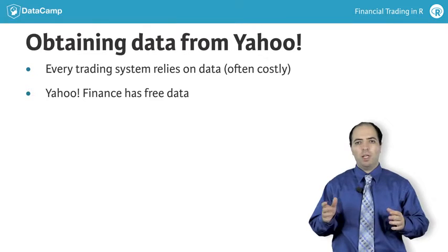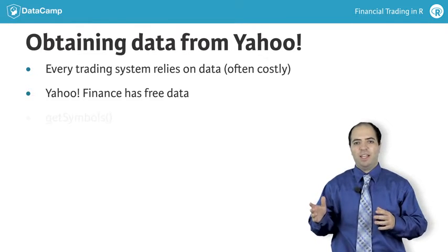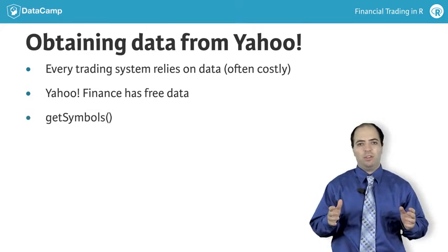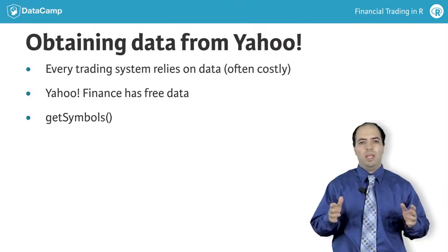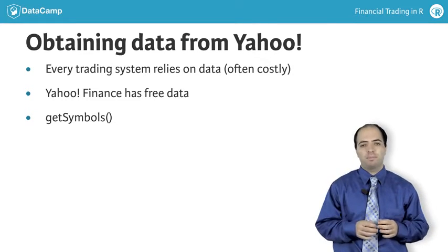In R, the QuantMod library has the GetSymbols command, which will create an object in your working environment with the name of the financial asset you obtained.